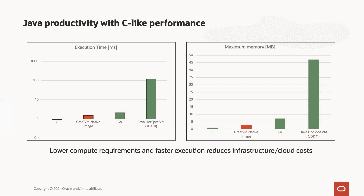Memory consumption is the second dimension. A typical ahead-of-time compiled Java app requires quite a lot less memory than running on the JVM, and interestingly less than Go too. Go and the GraalVM Native Image generated executable are fairly similar — both are application code compiled to machine code coupled with a garbage collector. So if you're a Java developer thinking you need to move to Go to go to cloud or containers, this is evidence that's actually not the case.